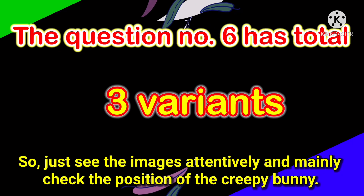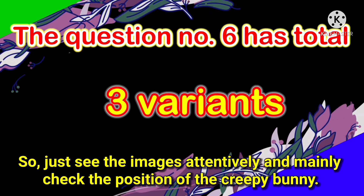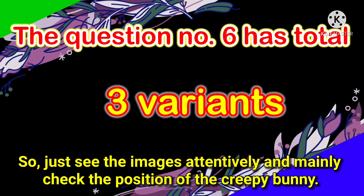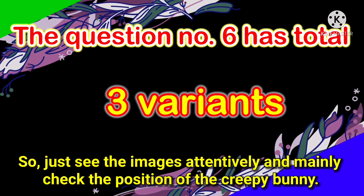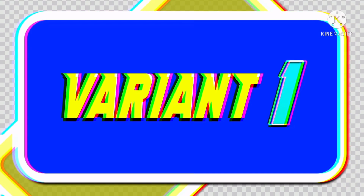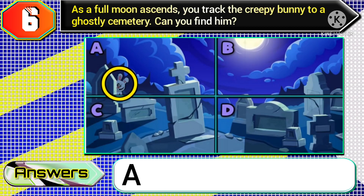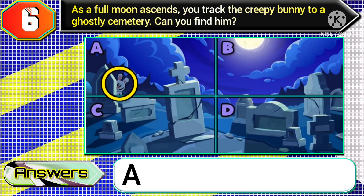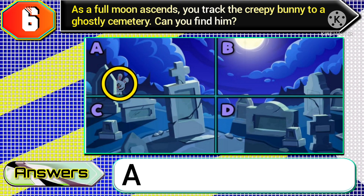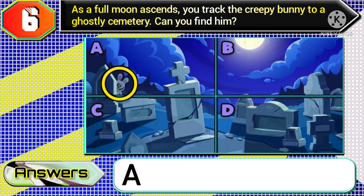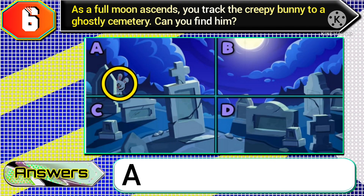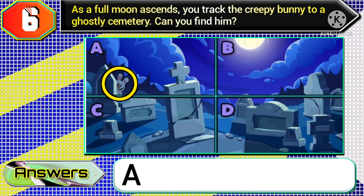Question number six has total three variants, so see the images attentively and mainly check the position of the creepy bunny. In variant one, if you get the creepy bunny hiding in the option A image part, then you need to choose option A.